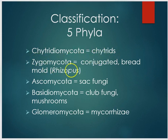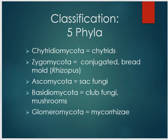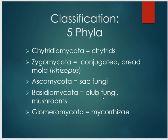Then we have the zygomycetes or zygomycota — these are conjugated bread molds, a group of fungi that reproduce sexually by fusing together their vegetative state. The ascomycetes or ascomycota are considered sac fungi, and we'll talk about these in relation to how they have impacted bat populations. Basidiomycetes or basidiomycota are the club fungi — the typical mushrooms you think of are part of basidiomycetes. And then the glomeromycota or glomeromycetes include the mycorrhizae, which are extremely important to the plant kingdom.